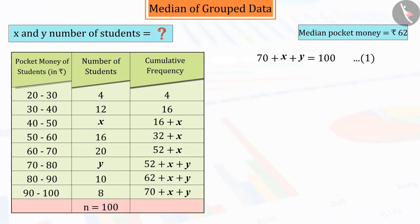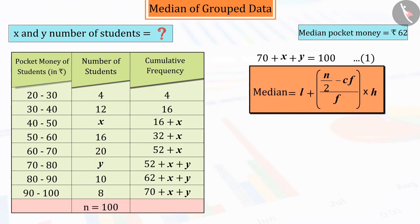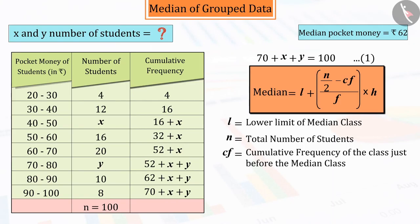If we talk about the median, we can see from the median formula: L or the lower limit of the median class, n which is the total number of students, cf or the cumulative frequency of the class just before the median class, f or the frequency of the median class, and h that is class size will be required.